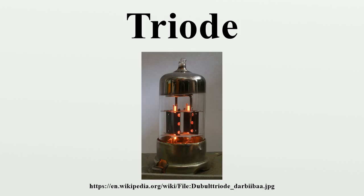High-power triodes generally use a filament which serves as the cathode, because the emission coating on indirectly heated cathodes is destroyed by the higher ion bombardment in power tubes. A thoriated tungsten filament is most often used, in which thorium in the tungsten forms a monolayer on the surface which increases electron emission. The envelope of the tube is often made of more durable ceramic rather than glass, and all materials have higher melting points to withstand higher heat levels. Tubes with plate power dissipation over about 350 W must be actively cooled, with the plate electrode made of heavy copper projecting through the tube wall and attached to a large external finned heat sink cooled by forced air or water.